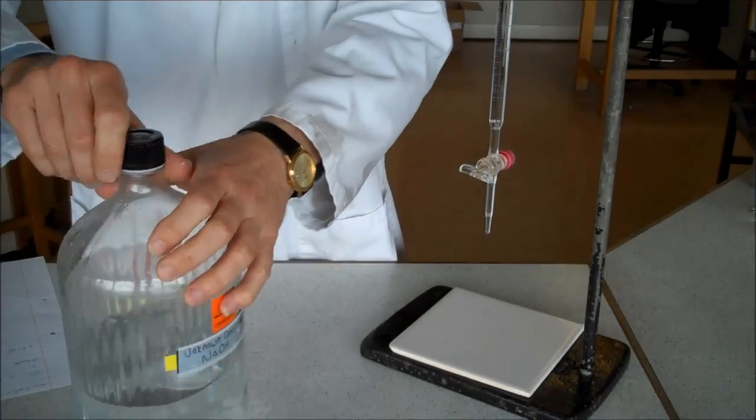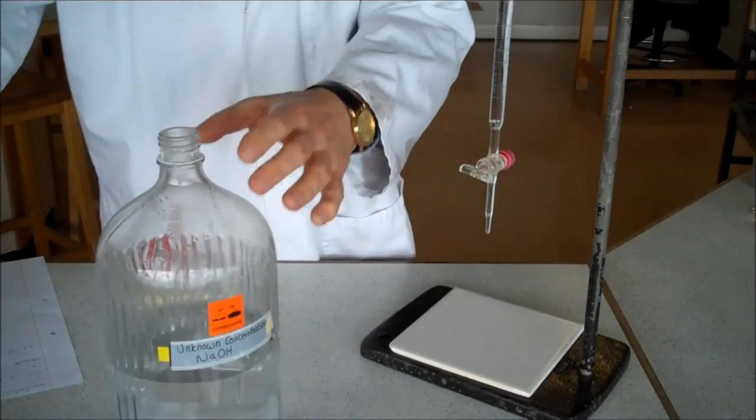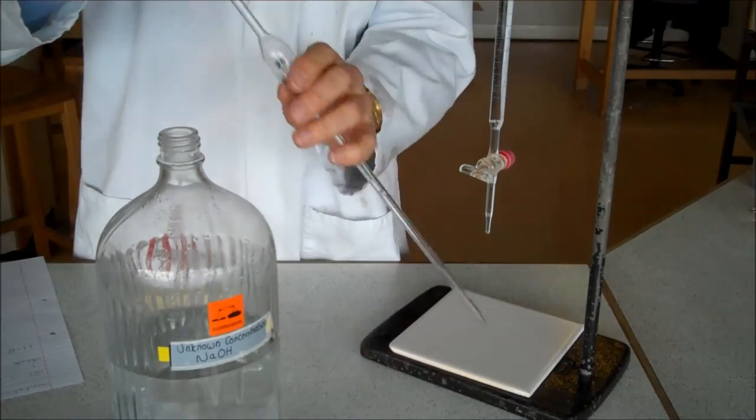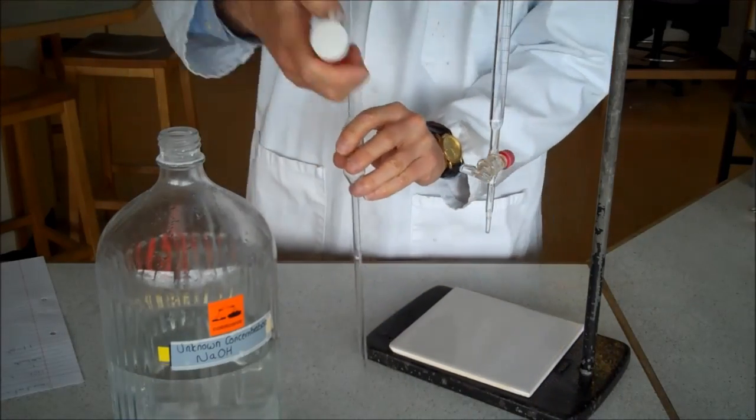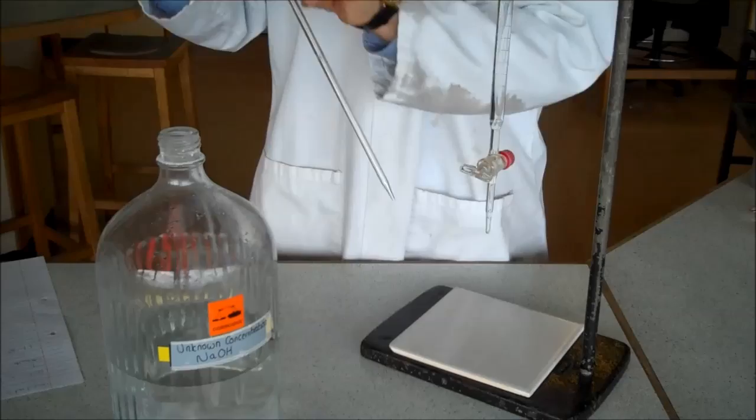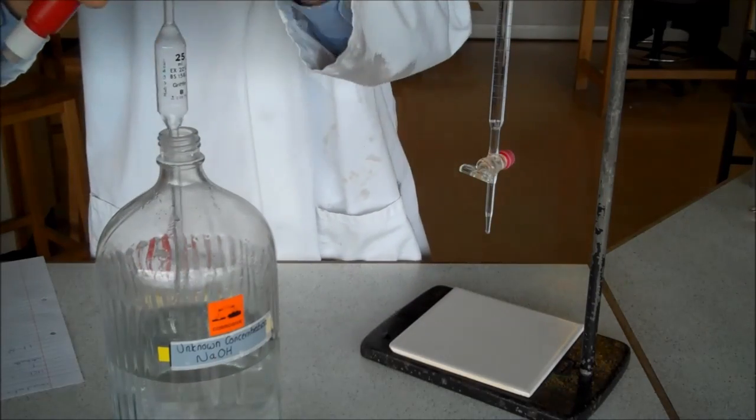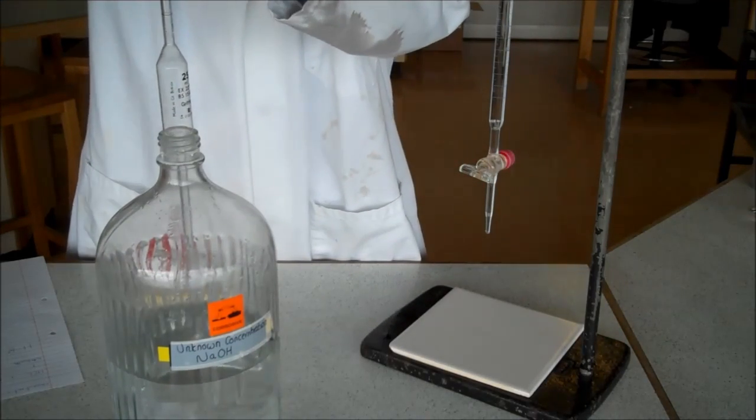First step is to measure out an accurate volume of that. For that we need a volumetric pipette, one of these devices, and a sucker, or a pipette filler, that will suck up the liquid into the pipette.